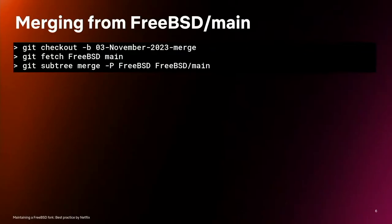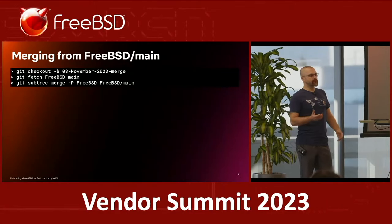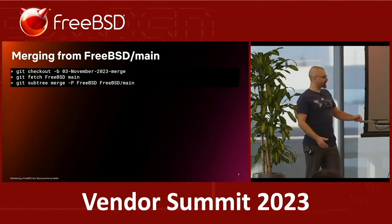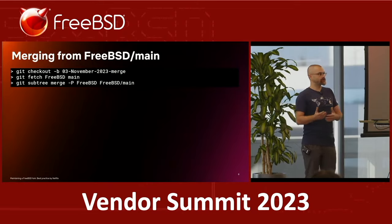Importing from FreeBSD is pretty straightforward. Because previously you added FreeBSD as a subtree, all following merges should also go through the subtree module. You create a project branch and in this project branch you do a subtree merge. Of course, as long as your code diverges, it creates conflicts and you need to resolve them.